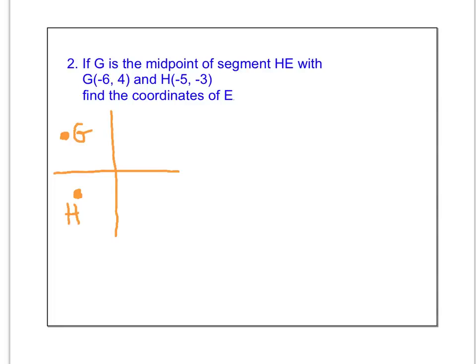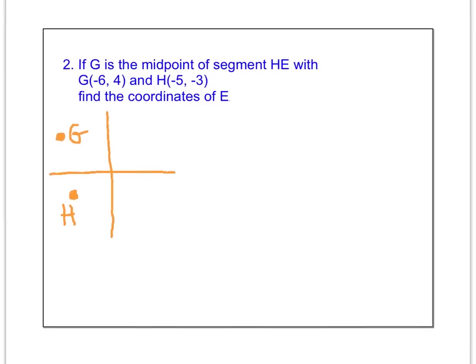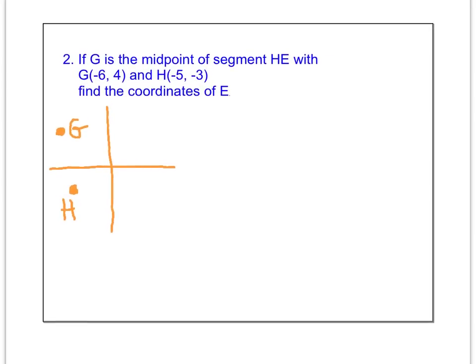If G is the midpoint of segment HE with G at negative 6, 4 and H at negative 5, negative 3, find the coordinates of E.